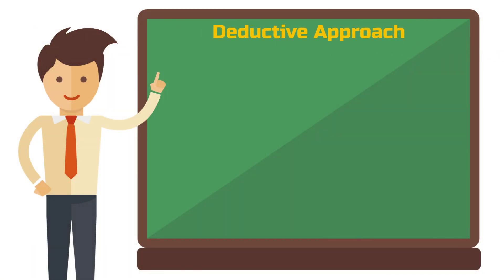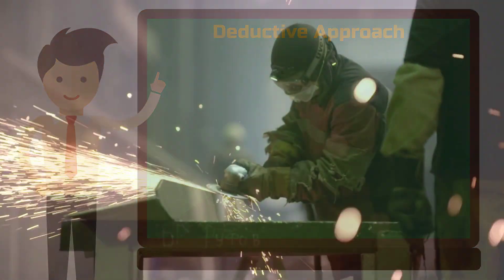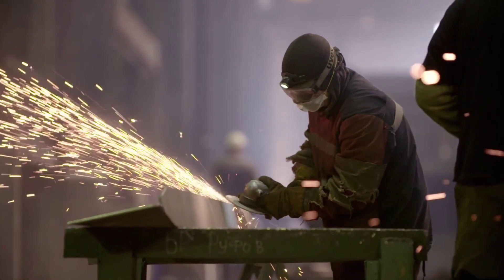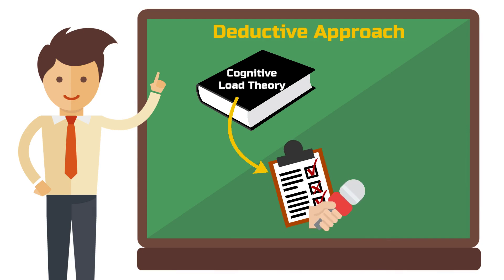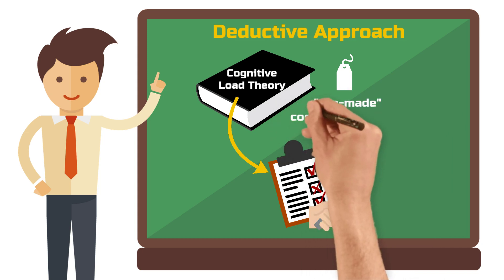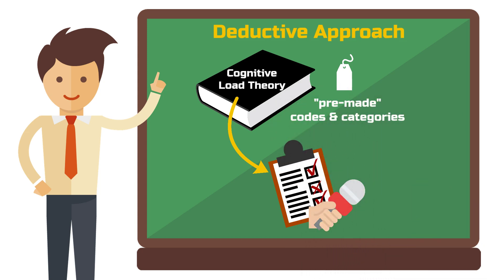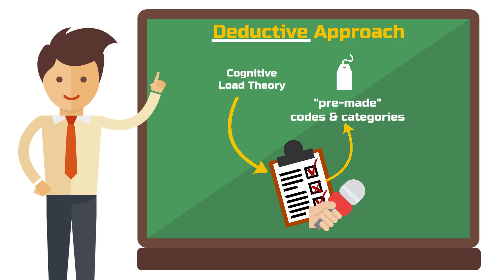A deductive approach in contrast would look quite different. Suppose the company's employees work with heavy machinery and already need to concentrate a lot. Here you could use a theory like cognitive load theory to design your interview questions and guide your analysis. The theory provides specific dimensions to structure your study — these are, if you will, pre-made codes and categories into which you sort your data, meaning the interview quotes that you collect. Your interview data analysis then follows a deductive approach and not an inductive one, based on the predetermined theoretical framework.